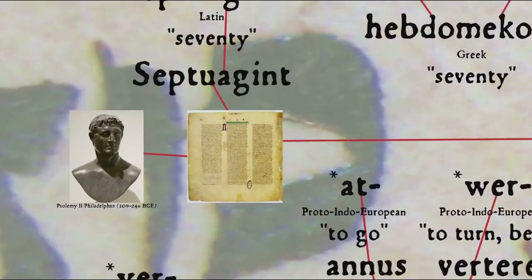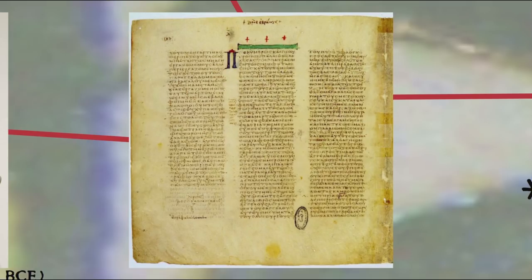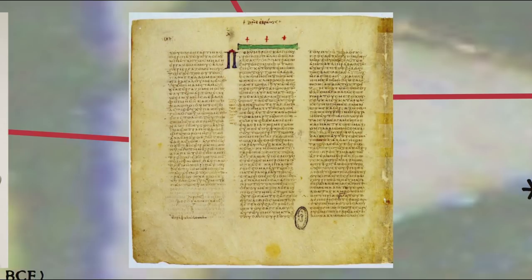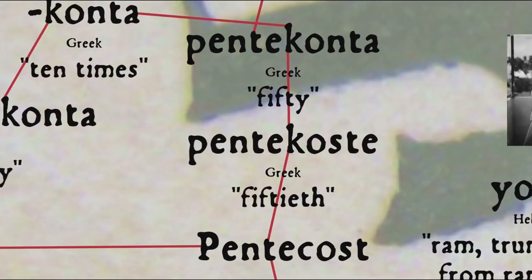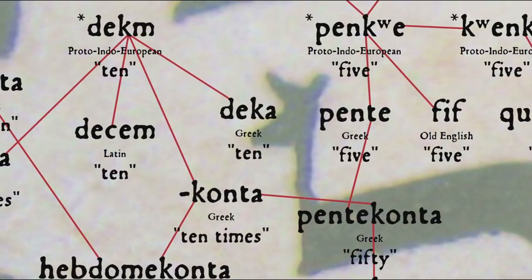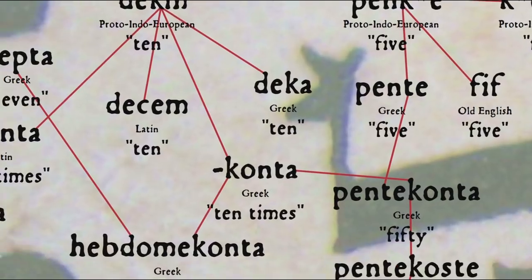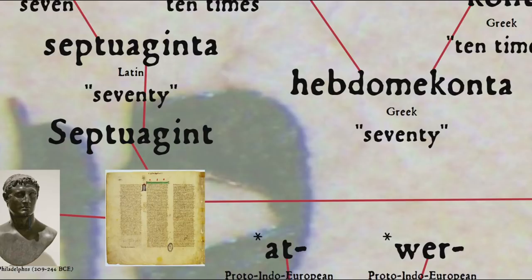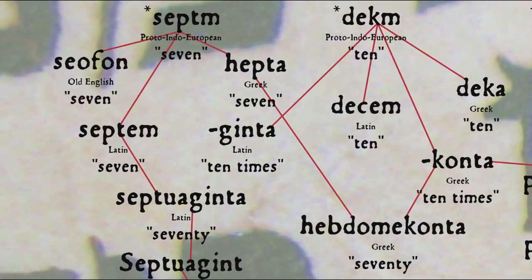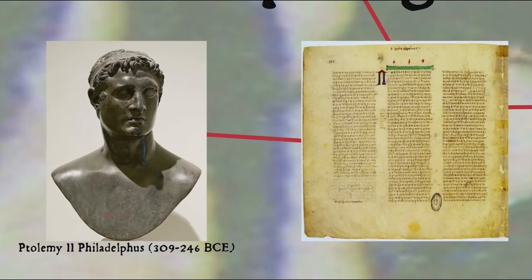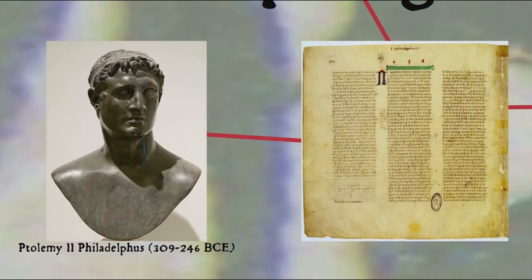Since seven weeks and a day is a total of fifty days, when the Hebrew scriptures were translated into Greek for Jews who could no longer read Hebrew, Shavuot was translated as Pentecost — a Greek word coming from the Proto-Indo-European roots for five and ten. This translation was called the Septuagint, from the later Latin title Septuaginta, itself from the Greek title Hebdomekonta, both words descending from the Proto-Indo-European words for seven and ten, in reference to the seventy scholars who produced the translation at the request of Ptolemy II Philadelphus in the 3rd century BCE.